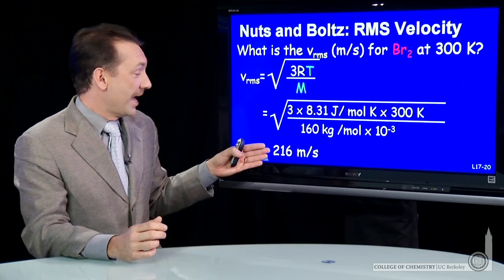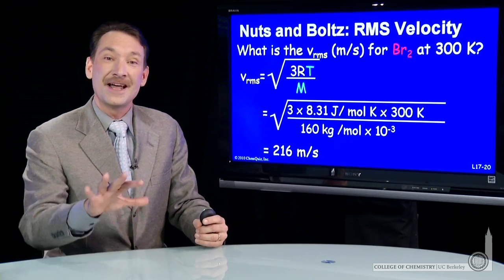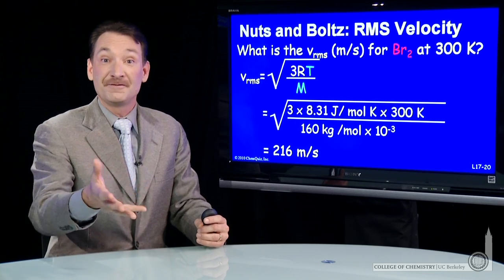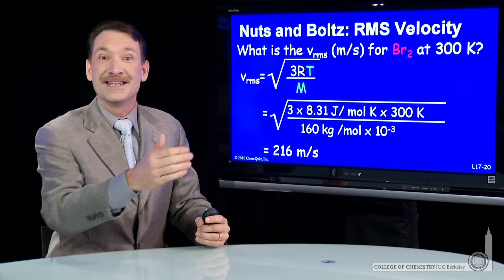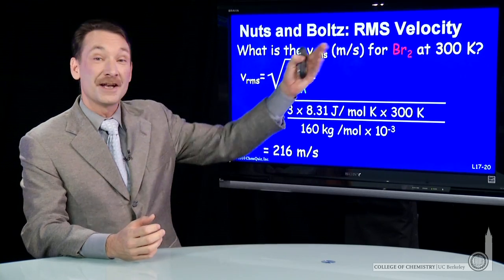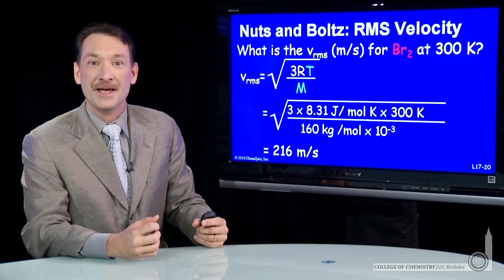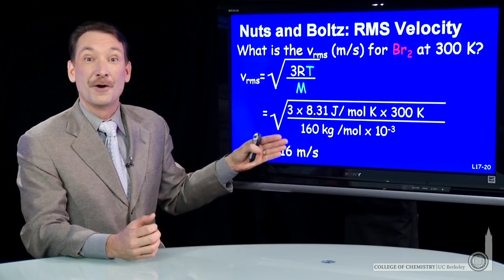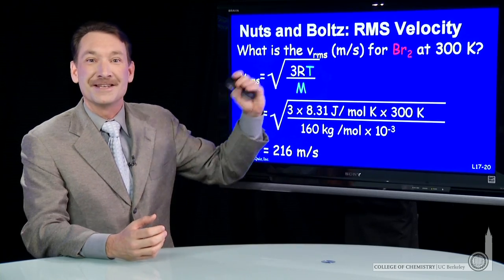So a gas at about 800 feet per second is on the order of half to a third of the velocity of bullets leaving the barrel of a gun, even at these modest temperatures of 300 Kelvin. That's amazing speeds for gas particles at modest temperatures.